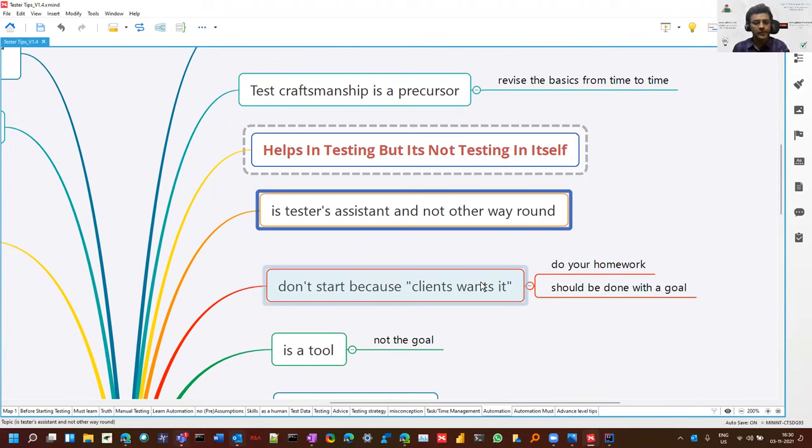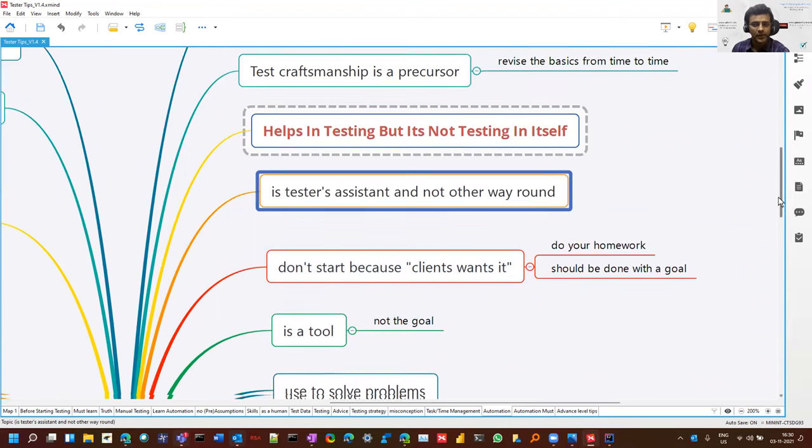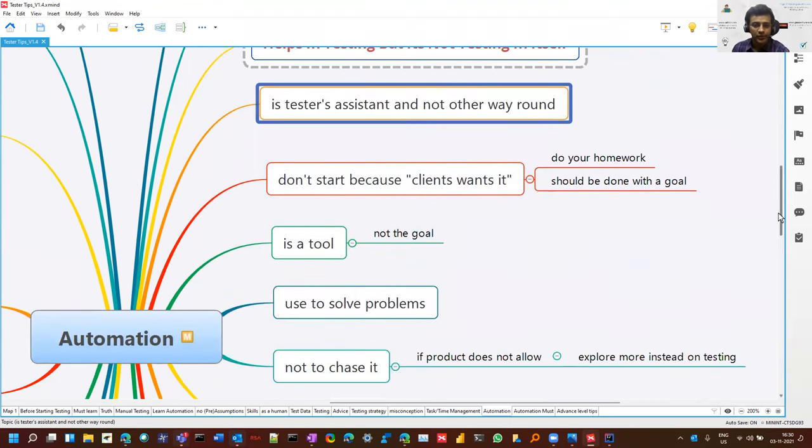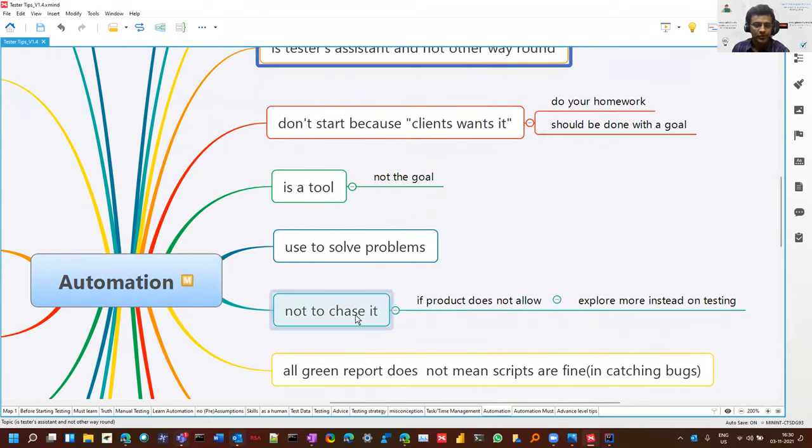Don't do automation because a client wants it. You have to do your homework, whether it is possible or not, go for feasibility, whether it is helping you or not. Don't do it because somebody said to you, management wants that. We have to do scenario by scenario, check it out, whether it is doable, whether there is any ROI or not.